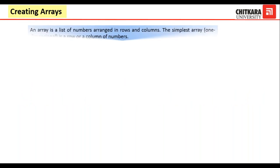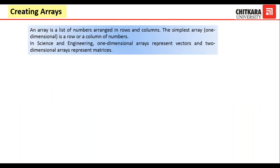Before we start creating arrays, let me tell you what arrays are. Arrays can be classified into one-dimensional arrays or two-dimensional arrays. An array is a list of numbers arranged in rows and columns. The simplest array, which is one-dimensional, is a row or a column of numbers. In science and engineering, one-dimensional arrays represent vectors and two-dimensional arrays represent matrices. So arrays are just an arrangement of numbers into rows and columns. If there is only one row or one column, it is a one-dimensional array. If there are multiple rows and columns, they are termed matrices.